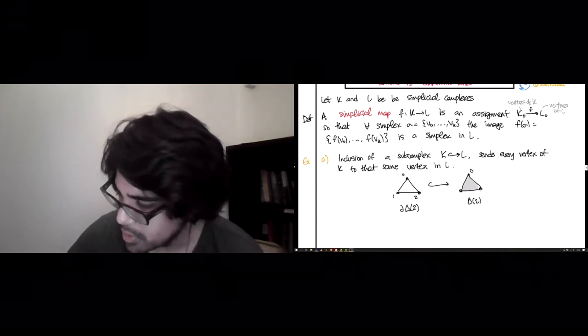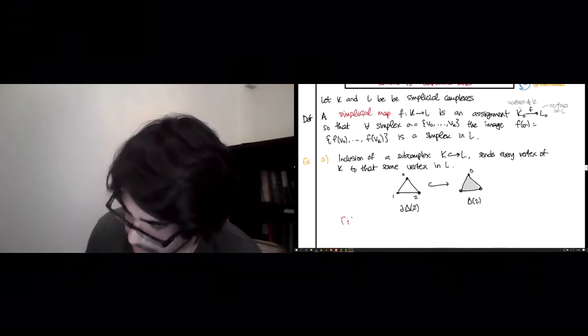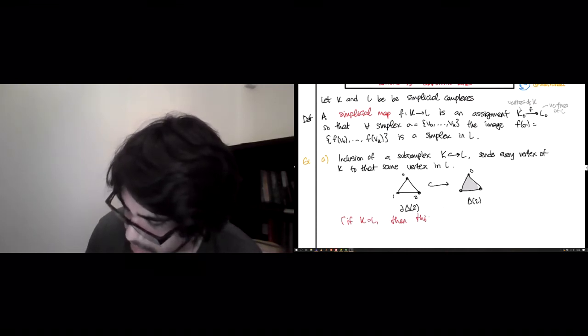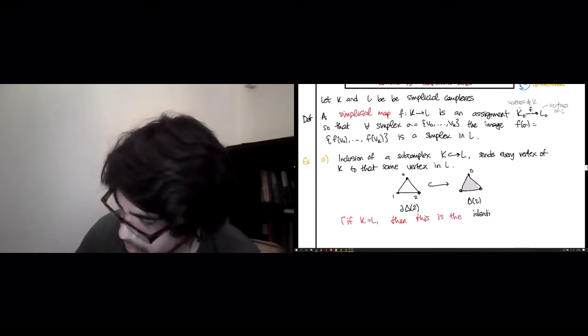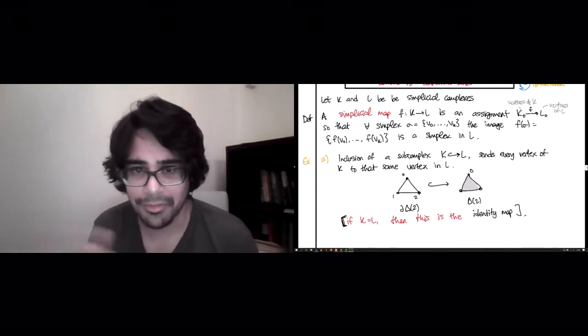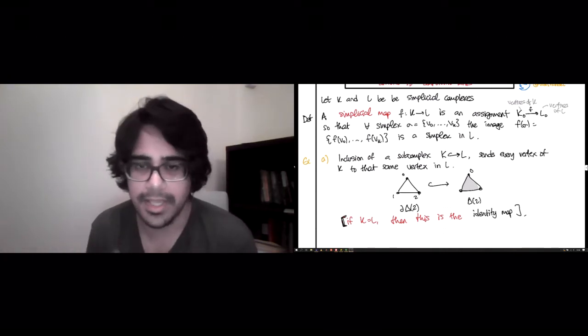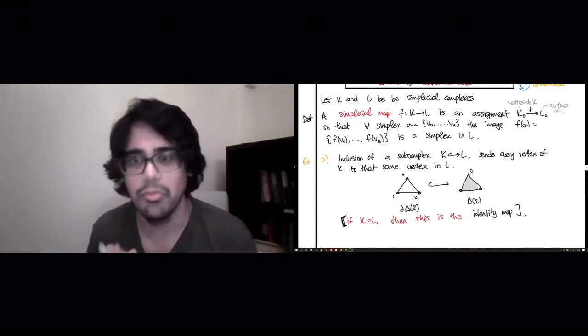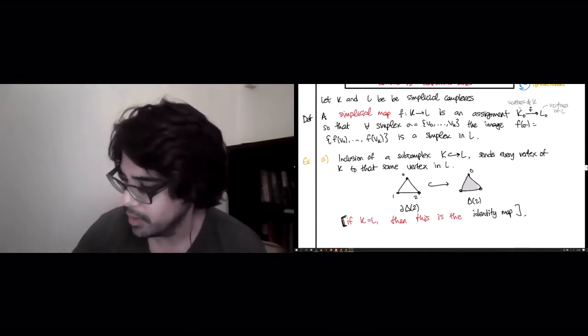An even more special case is if K equals L, then this gives the identity map. So this recipe for including, if both sides were filled in, then you'd just be sending every simplex to itself in the most boring way possible.